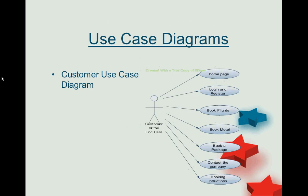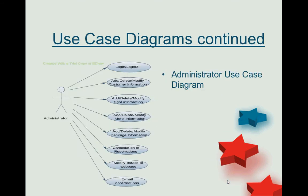Coming to the use case diagram, there are two main modules: the customer module and the administrator module. In the customer module, the actions a customer can perform on the website include reading the home page, logging in, registering, booking a flight, booking a package, contacting the company, and going through booking instructions.